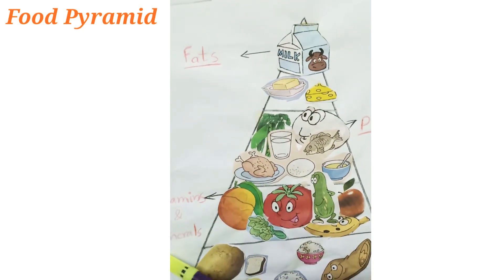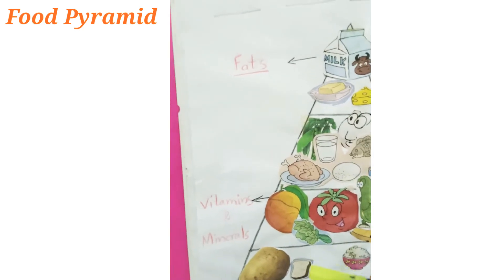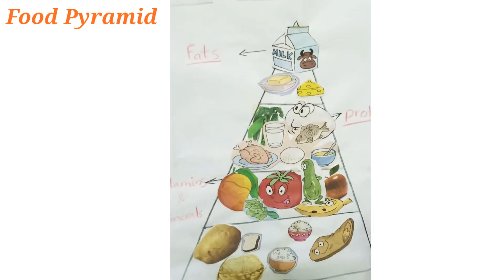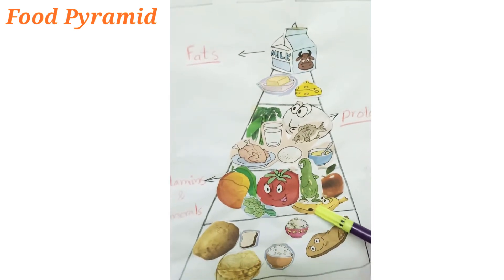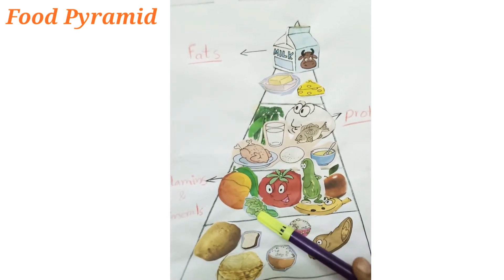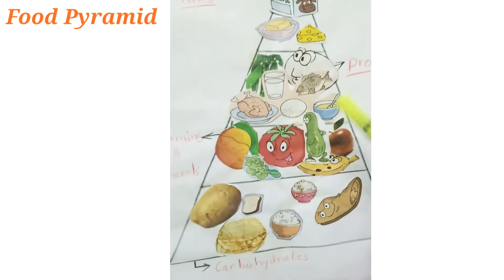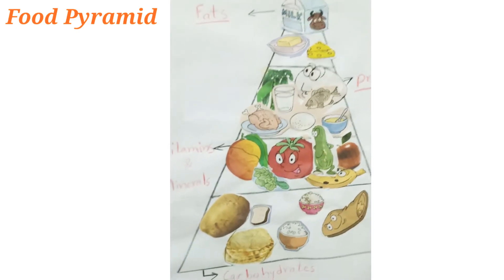So in vitamins and minerals, we have fruits and vegetables like apple, tomato, cucumber, banana, spinach, and mango.